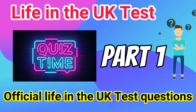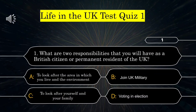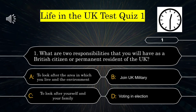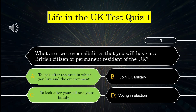Life in the UK test, quiz question 1. What are two responsibilities that you'll have as a British citizen or permanent resident of the UK? Options: A) to look after the area in which you live and the environment, B) join UK military, C) to look after yourself and your family, D) putting in election. The correct answers are A) to look after the area in which you live and the environment, and C) to look after yourself and your family.